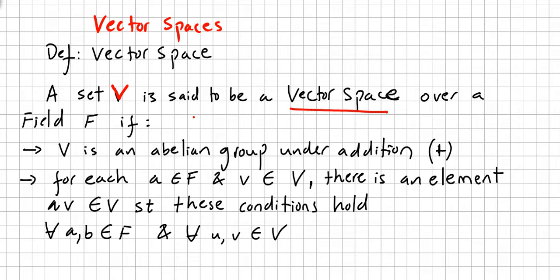We define the vector space over a field F. So we have a set V and a field F, if V the set is an abelian group under addition, and for each A in the field and V in the set there is an element AV in the set such that these conditions hold.